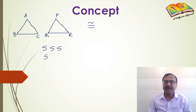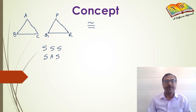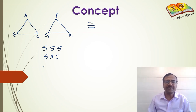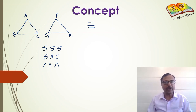Likewise, if two sides and the included angle of one triangle are equal to the corresponding parts of the other triangle, then also the two triangles are congruent. We also have the ASA rule, where two angles and the included side of one triangle are equal to the corresponding parts of the other triangle.